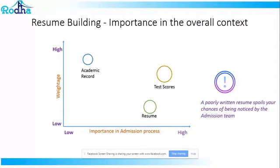Let's look at this graph. If I were to understand the importance of resume from a graph — looking at the weightage it has versus the importance it has in the admission process — I'll see that although there are no fixed numerical weightage given for a good resume, it stands at a very high importance level in the admission process. What that means is: although a resume doesn't have a number attached to it in terms of weightage, if you do not have a well-written resume, you are essentially blocking your chance of getting into a top business school.